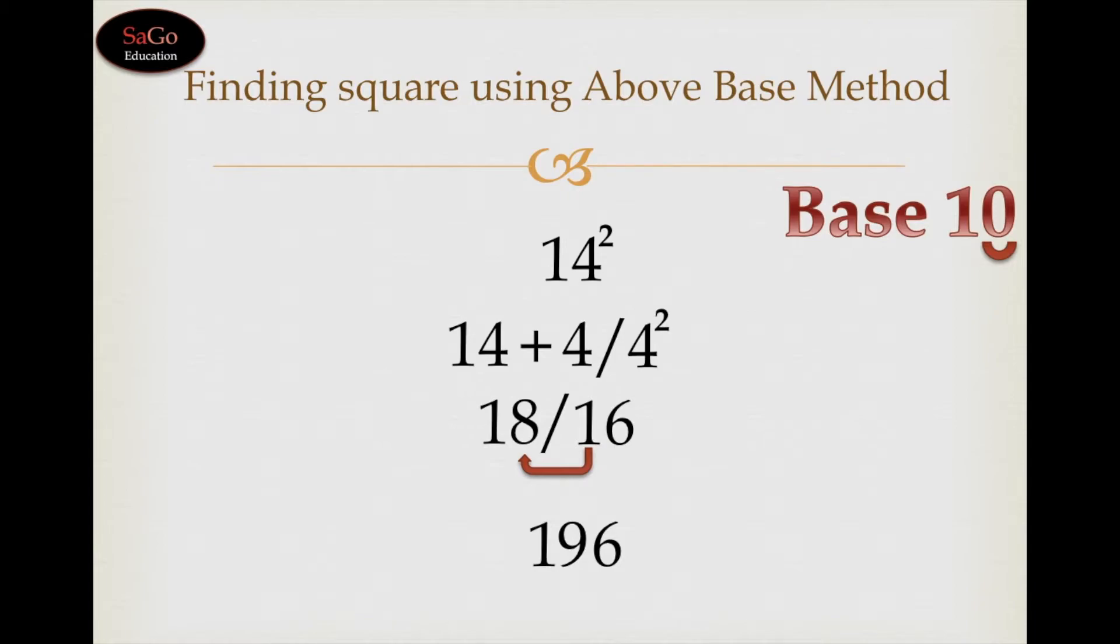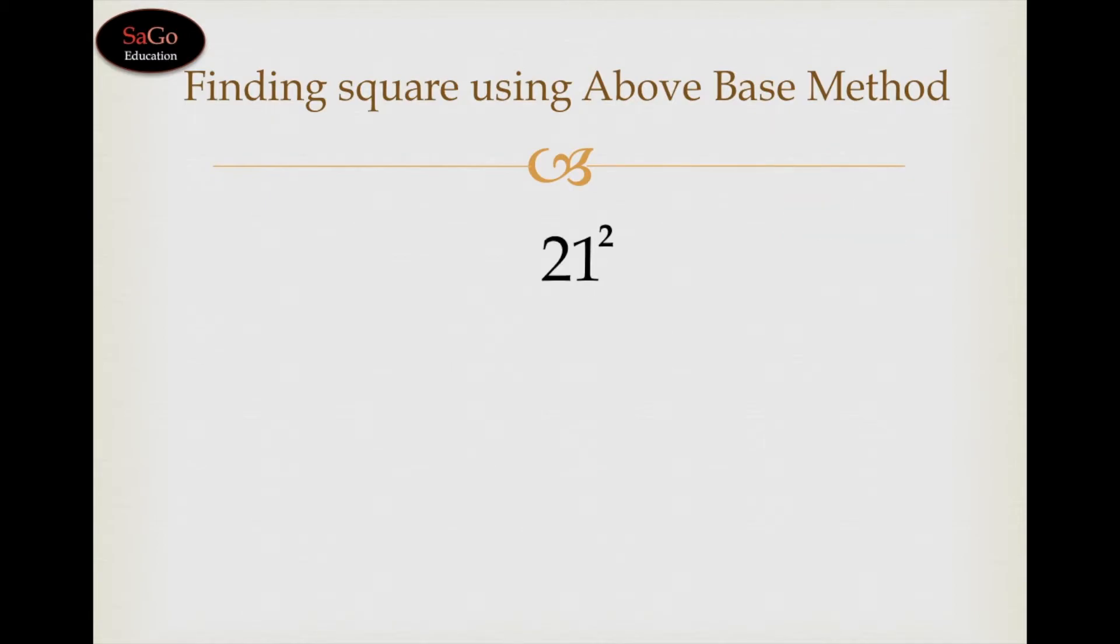Let's take one more sum, 21 square. Write 21 as it is. The nearest base of 21 is 20 and 21 is 1 above its base 20.